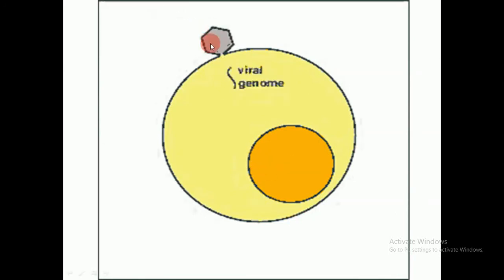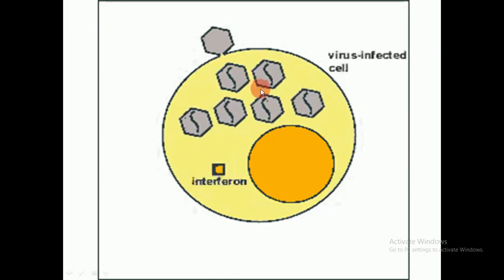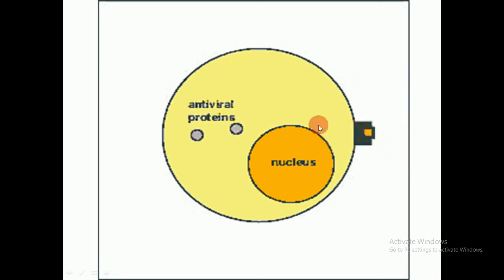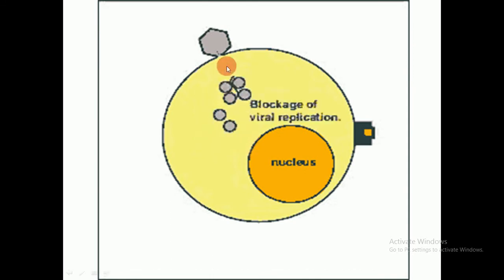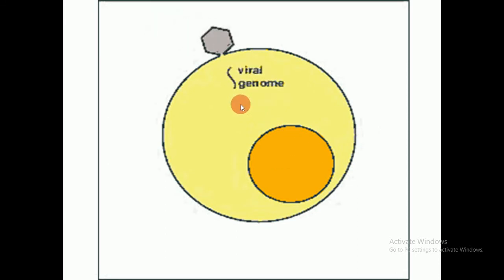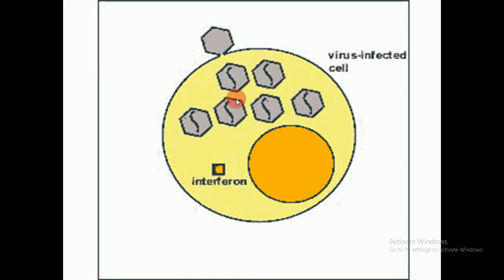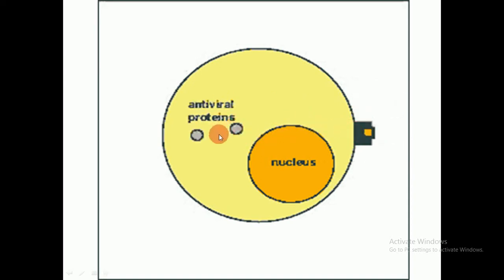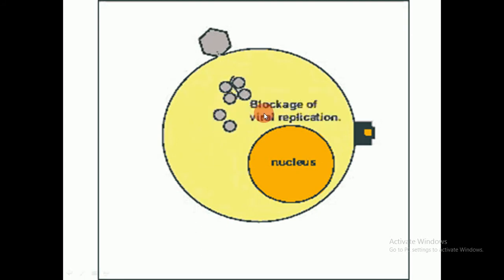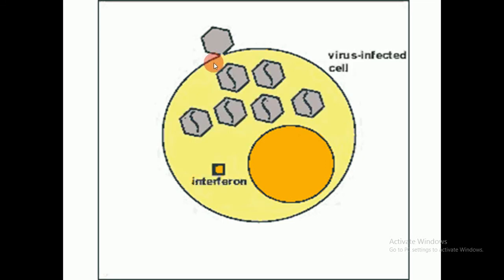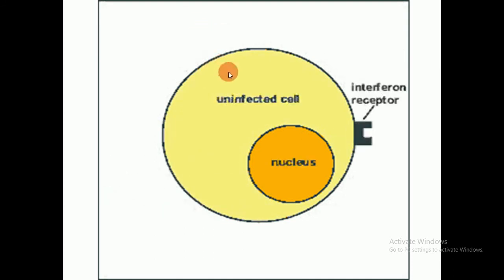When a virus enters the cell, the viral genome replicates inside the host cell. The host cell then secretes interferon, which binds to specific receptors and induces antiviral resistance, leading to blockage of viral replication. This is the mode of action of interferon against viral infection, and some viruses are treated with interferon.